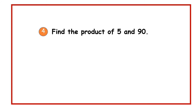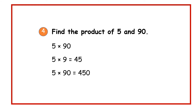Part 4: let us find the product of 5 and 90. This means 5 groups of 90, which is the same as 5 times 90. We first find 5 times 9, which is 45, and then write a 0 in the ones place to get 450.